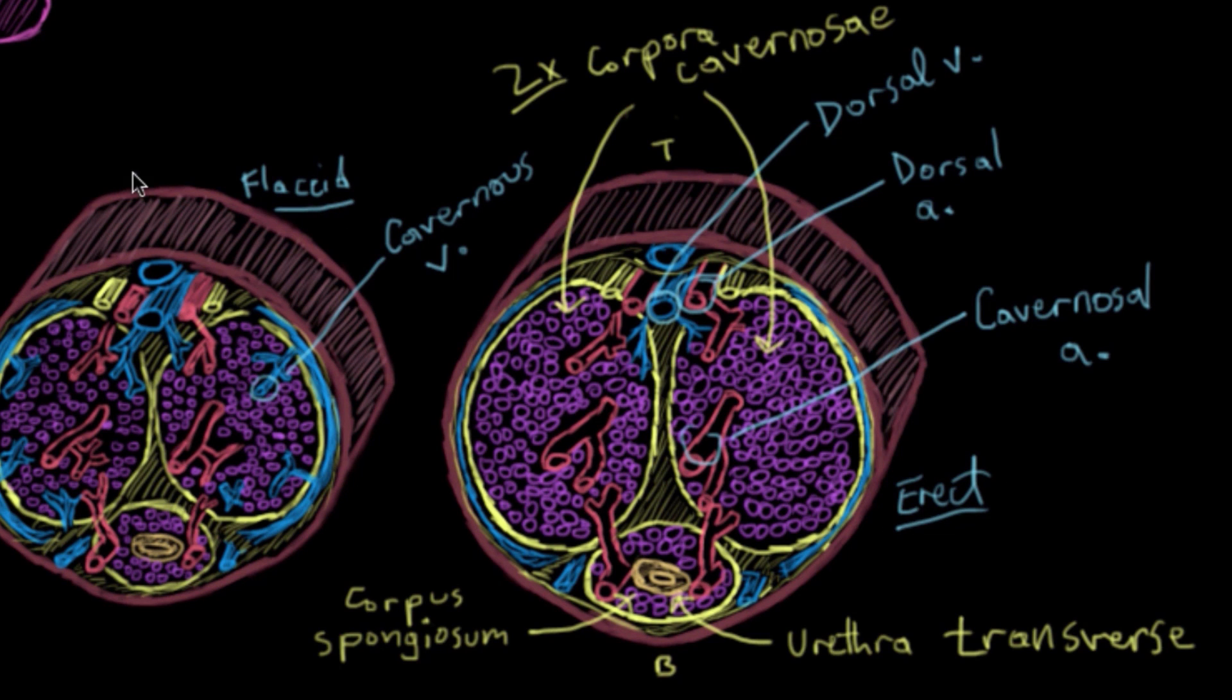The reason why the one on the left is flaccid is because it has arterioles that are constricted. These red arterioles, when they're constricted, don't actually allow much blood into the penis. But over here on the right, the erect penis is sexually excited. You can see visually that the arterioles on this side are much more dilated. That is, they let in a lot more blood and thus can cause an erection.